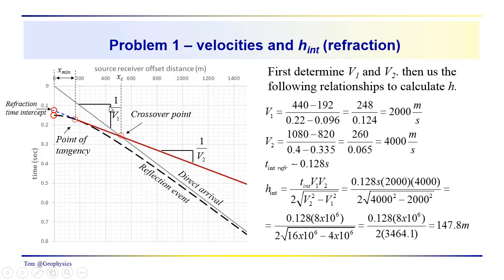These times here are approximately 0.096, and the intersection of this line here is 0.22 coming in just about on that line. So we calculate the delta x, delta t, we get a velocity of 2,000 meters per second. I suspect you got a number a little bit different than that, but you should be close to that. And we do pretty much the same thing. We look at the delta x going from about 1080 to 820, and from 0.335 to 0.4, delta x, delta t of about 4,000 meters per second. Again, your numbers may not be exactly 2,000 and 4,000, but you should be close to those numbers.